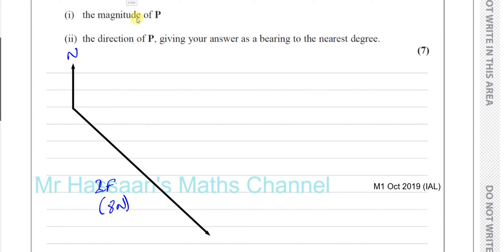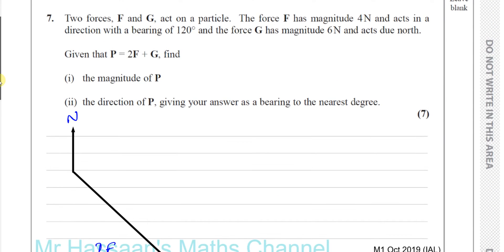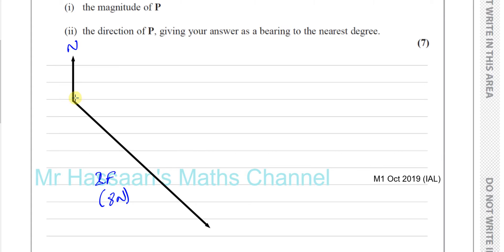Okay, and then you have a force G. When you add it to 2F, you'll get your force P. So, when you're adding two vectors together visually, you draw one of the vectors. And where that vector ends, you start drawing the other vector. So, the other vector is going to be going due north, so straight up.